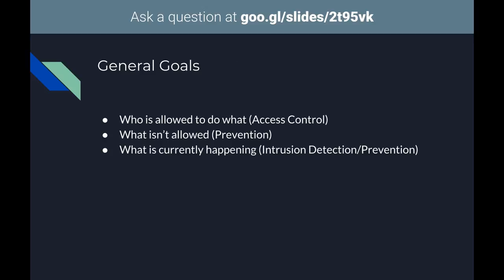When we talk about infrastructure security, there are three main goals. You can ask questions via the link up top and I'll answer them, so feel free to raise your hand, shout out, or ask online. The three general goals are: who is allowed to do what — that's access control; what activity on the network you're going to stop explicitly — that's prevention; and what is currently happening — that's intrusion detection and prevention.